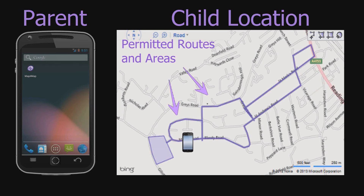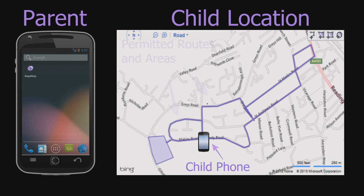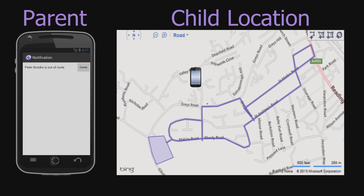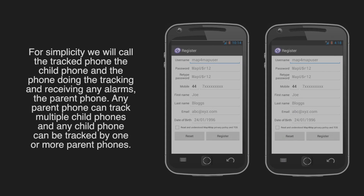Map for Map allows one phone to track another phone and receive an alarm when the tracked phone is off any approved routes, for example from home to school, or out of any approved areas, such as the nearby playing fields. For simplicity, we will call the tracked phone the child phone, and the phone doing the tracking and receiving any alarms the parent phone.